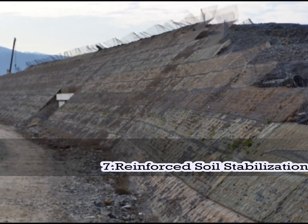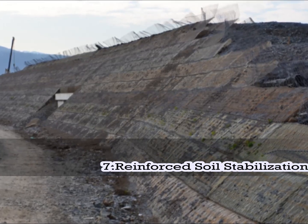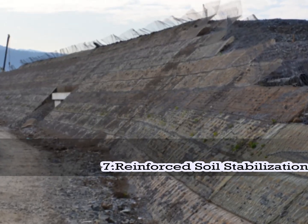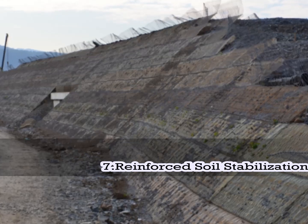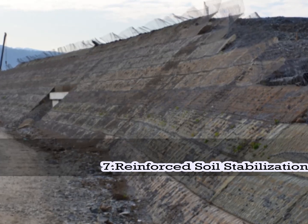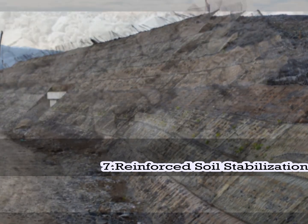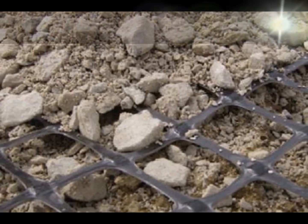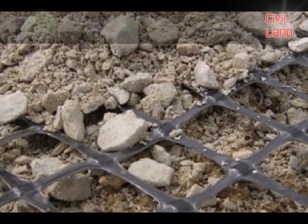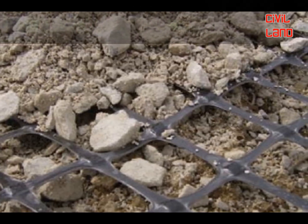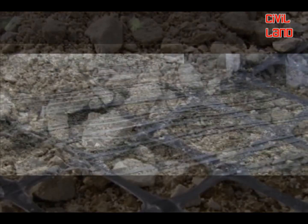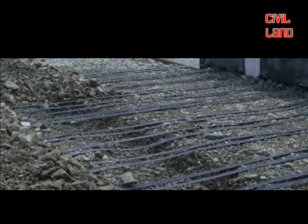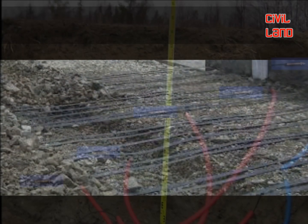Now comes reinforced earth soil stabilization. In this process, the soil is constructed with artificial reinforcing. The main advantage of this process is that it is very easy to install and allows quick construction. A reinforcement placed in horizontal layers throughout the height of the wall provides the tensile strength to hold the soil together.